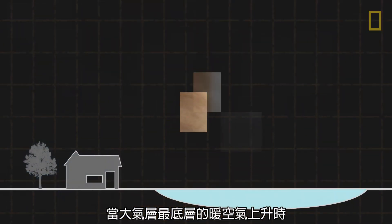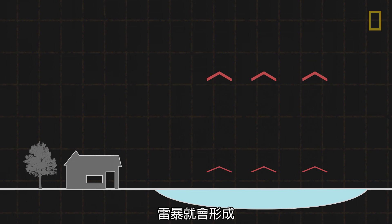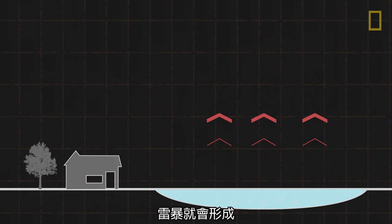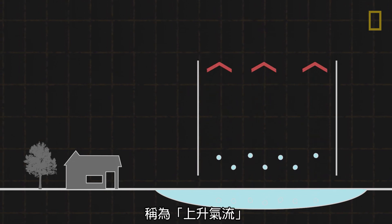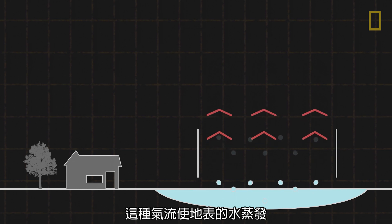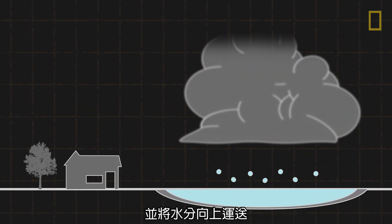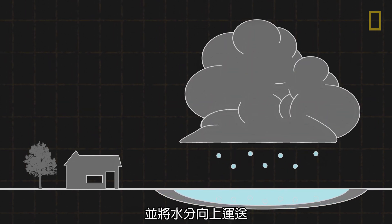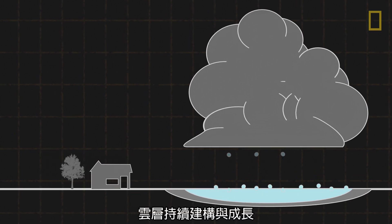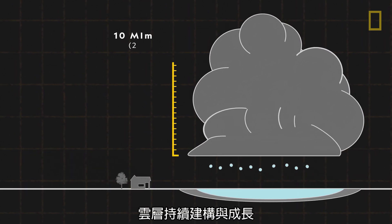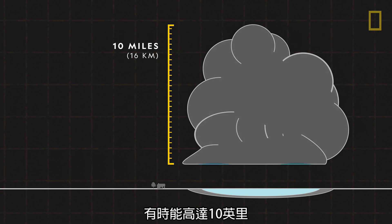All thunderstorms form when warm air in the lowest layers of the atmosphere rises. Called an updraft, this air causes water from the Earth's surface to evaporate and carries the moisture upward to form clouds. The clouds then build and grow, sometimes as tall as 10 miles high.